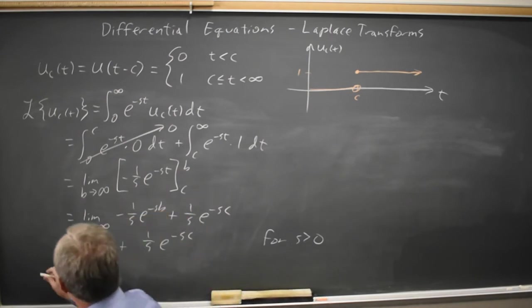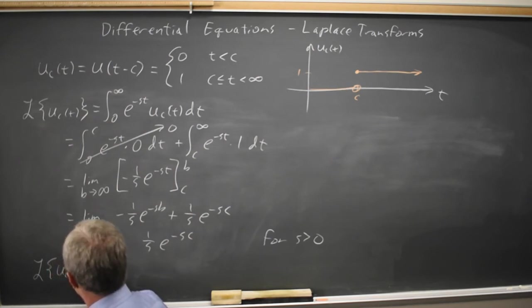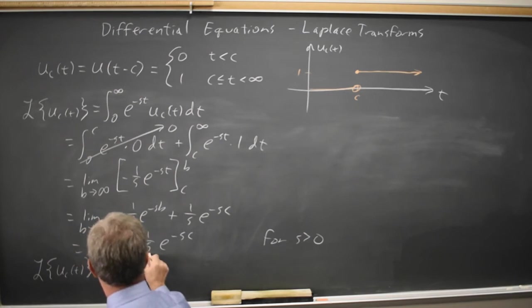So we can write the transform of our unit step function, u_c(t), is e to negative cs over s is how it's usually written.